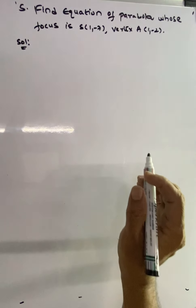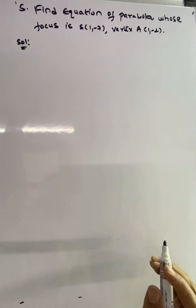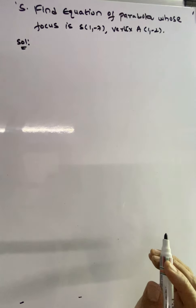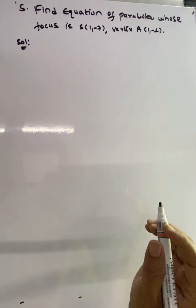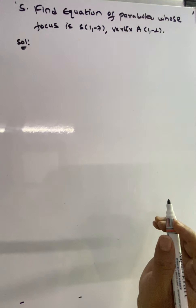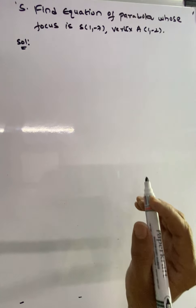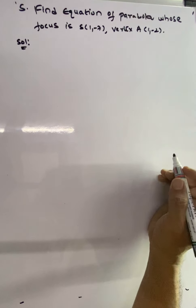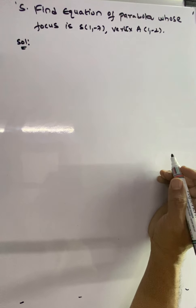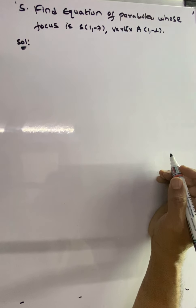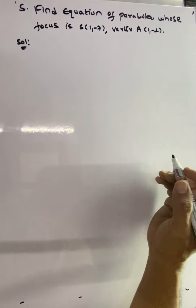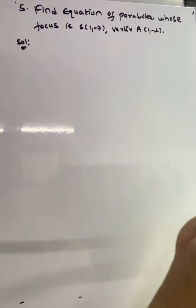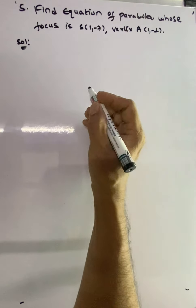We need to find the equation of a parabola where focus S is (1, -7) and vertex is (1, -2). Whenever focus and vertex are given, we have two methods: a short form and a long method. We will go with the actual long method.